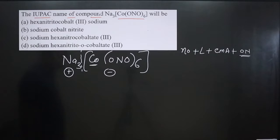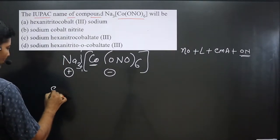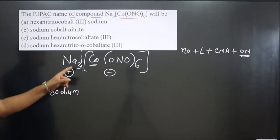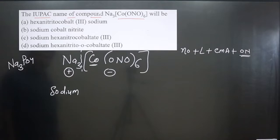The cation is sodium. We don't say trisodium because three is obtained by balancing the charge. Like if we say Na₃PO₄, we say sodium phosphate, not trisodium phosphate. The three comes from balancing the charge with the anionic part.